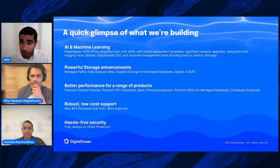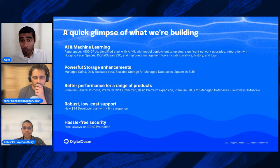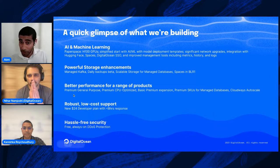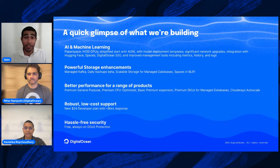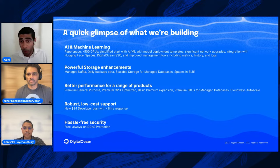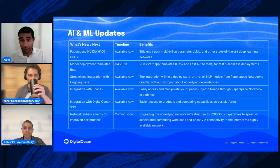Here's a glimpse of what we've been building. There are new updates coming in the AI/ML space, we're making powerful storage enhancements, we've launched products like Managed Kafka and Scalable Storage, and we're increasing performance across a wide range of our VMs — which we call Droplets — along with new support plans coming up. Feel free to drop your questions in the chat.